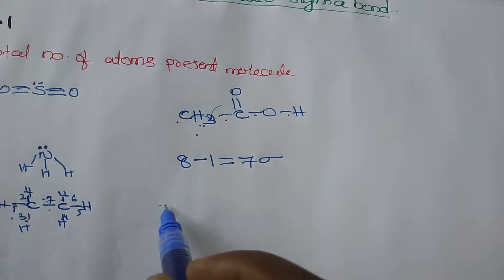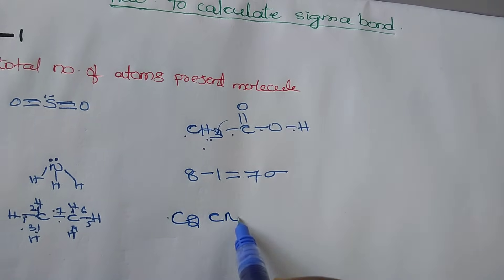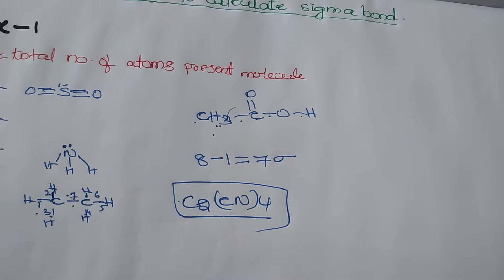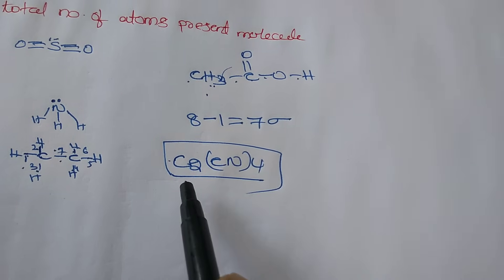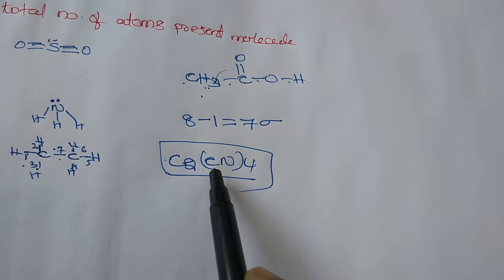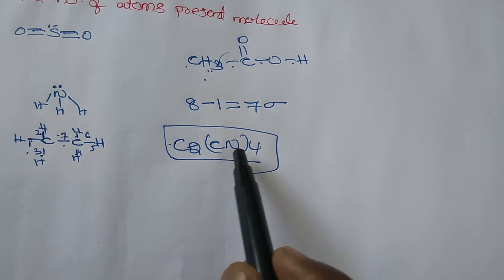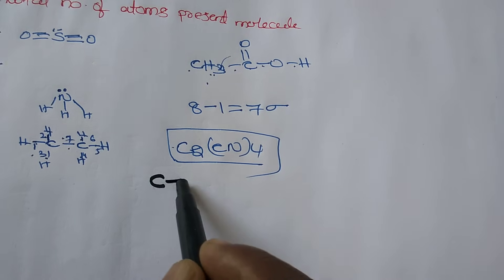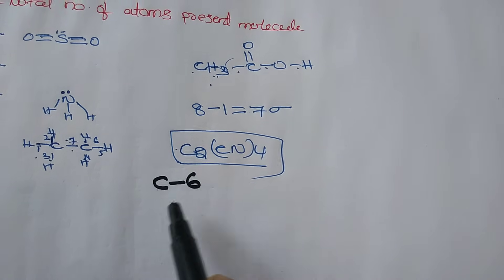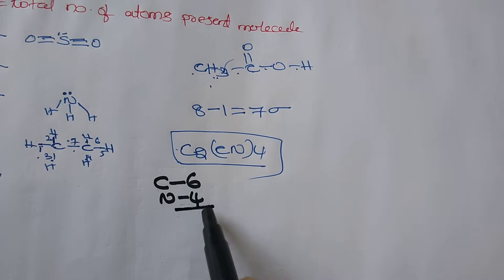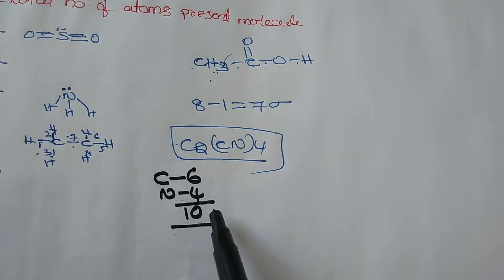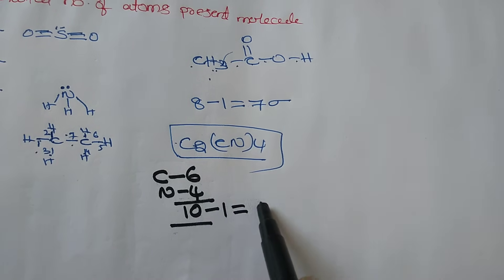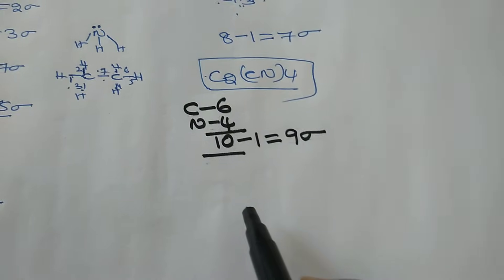Next, C₂(CN)₄. I want to know how many sigma bonds are present. There are two carbons in C₂ and four CN groups each with one carbon and one nitrogen. Total: six carbons and four nitrogens — ten atoms. According to the formula, ten minus one equals nine sigma bonds.